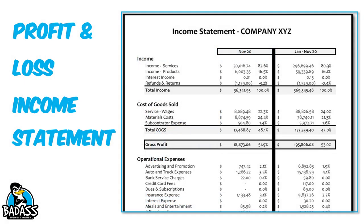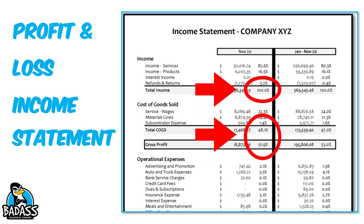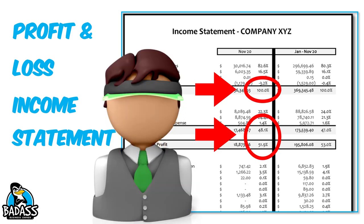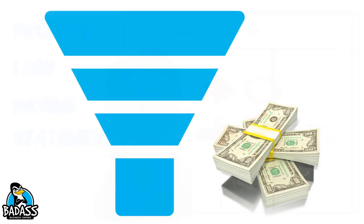On a typical profit and loss statement, you should see some numbers which show the percentages. You have your dollar amounts and you have your percentages. A lot of people ask, what are those percentages? If you don't see them, you need to talk to your accountant because it's a simple button they push when they generate those profit and loss statements. And if you do your own P&L in QuickBooks or another tool, there is an option that allows you to add the percentages as well. You need to make sure that you have that on — it's a really powerful tool to increase your profits.